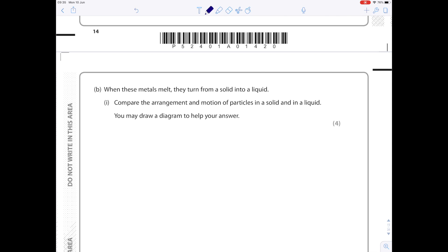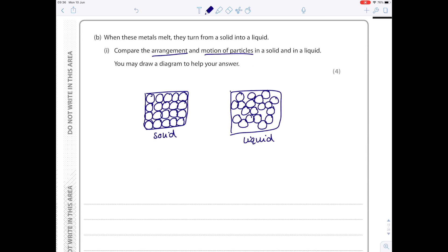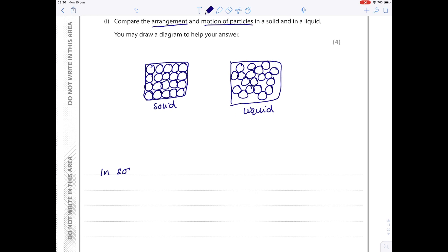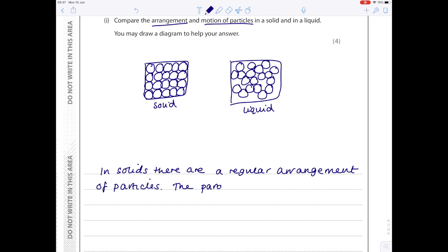When these metals melt, they turn from a solid into a liquid. Compare the arrangement and motion of particles in a solid and liquid. This is a nice question, so let's make sure we answer both parts. In a solid, you need a very regular arrangement. They need to be touching. Whereas in a liquid, there's more space between them, but not so much space as there would be with a gas. In a solid, there is a regular arrangement of particles, and the particles vibrate in fixed positions. In liquids, there is an irregular arrangement of particles. The particles move more freely.